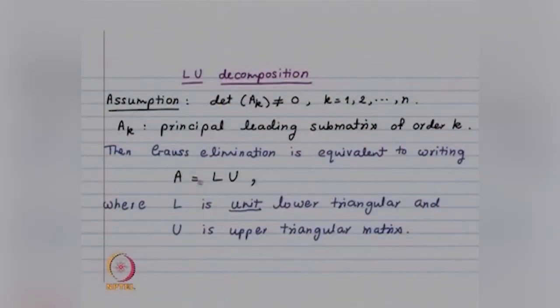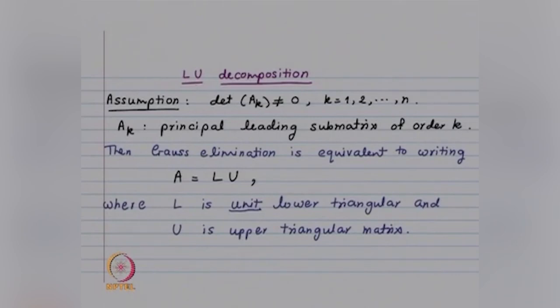Invertibility means that the determinant of A is not equal to 0. Now we want not only the determinant of A to be non-zero, but also the determinant of Aₖ to be non-zero. This Gauss elimination method — we will show that it is equivalent to writing A = LU, where L is a unit lower triangular matrix and U is an upper triangular matrix. We will always assume that LU decomposition means L is unit lower triangular and U is upper triangular.